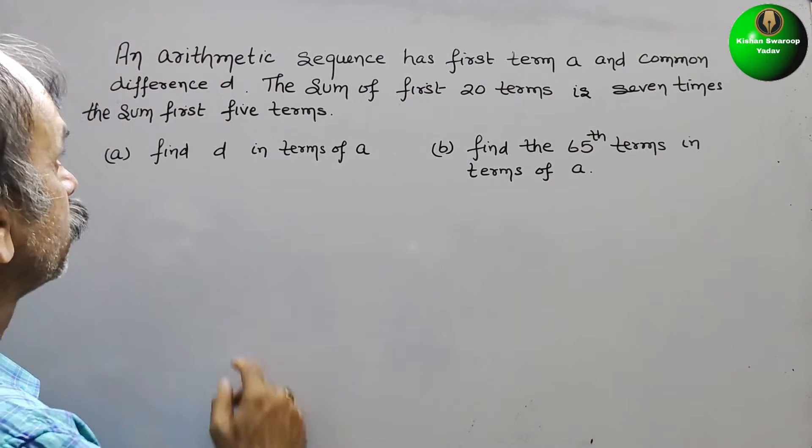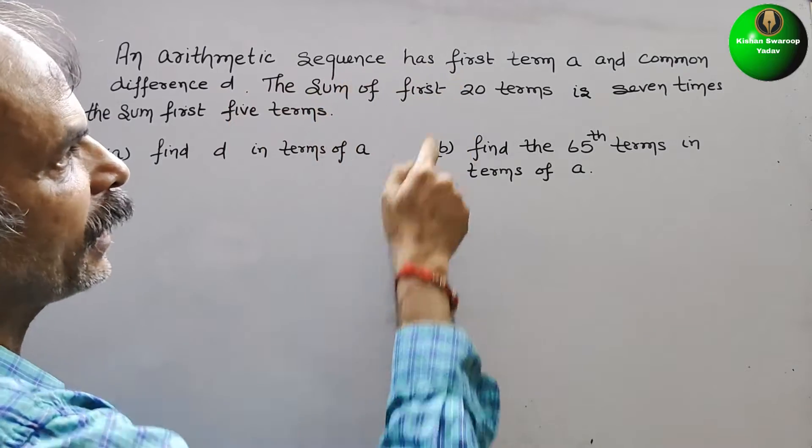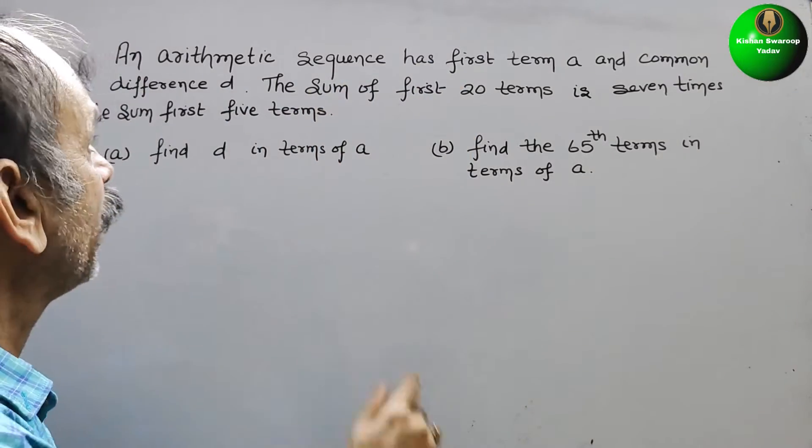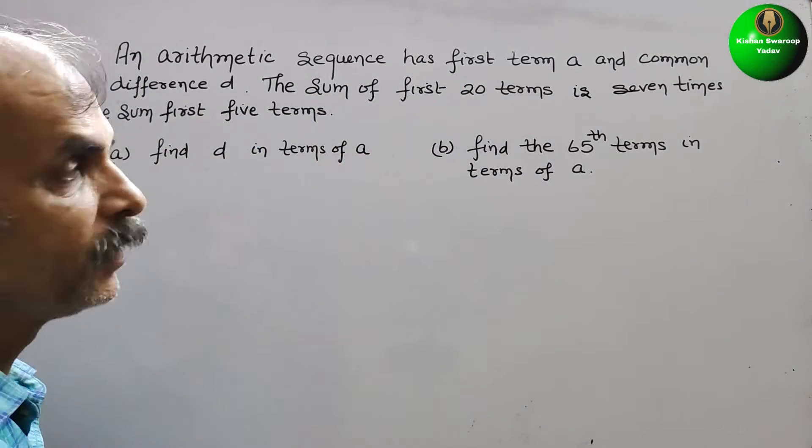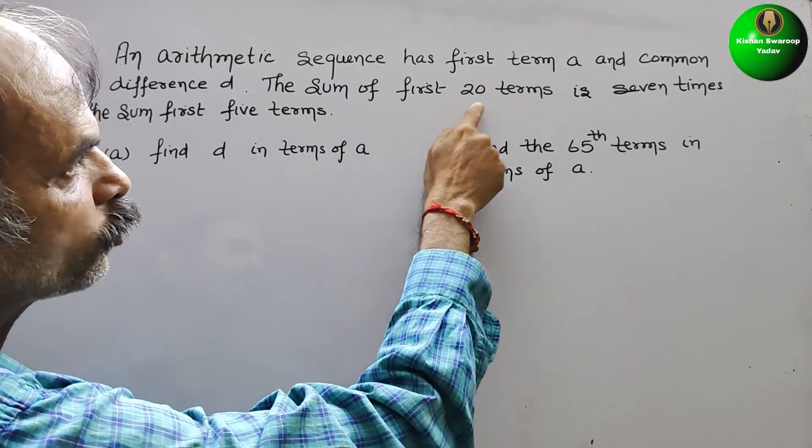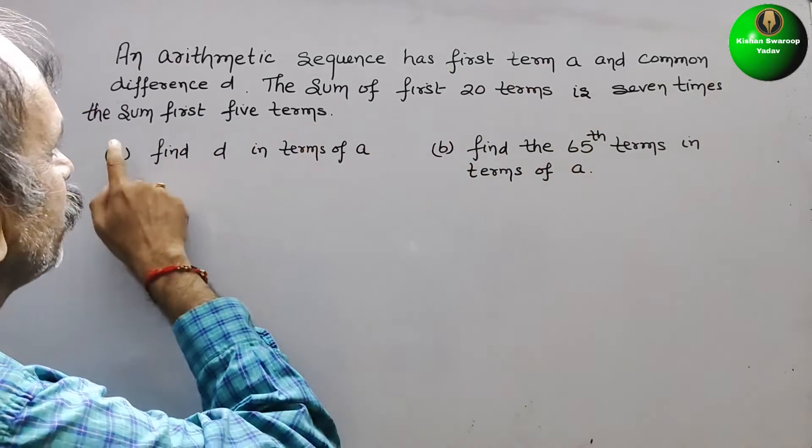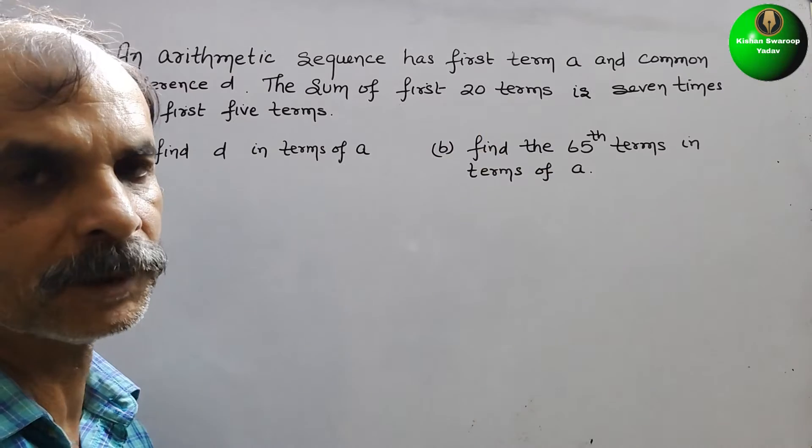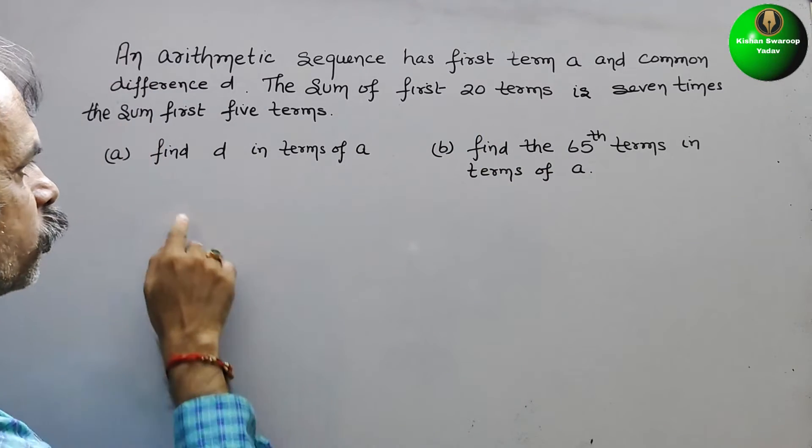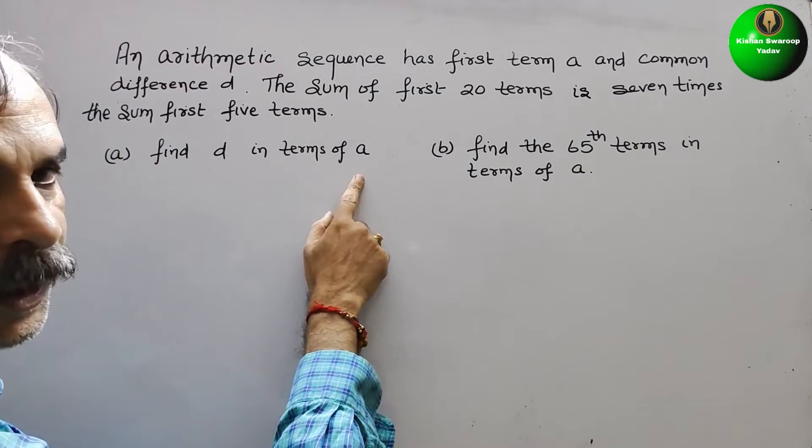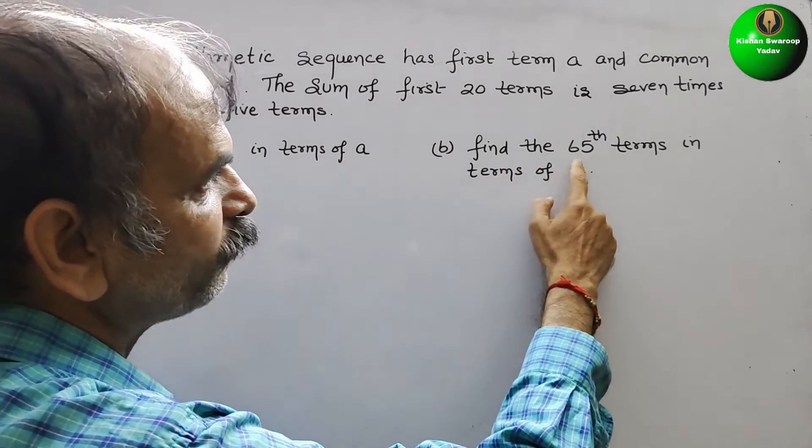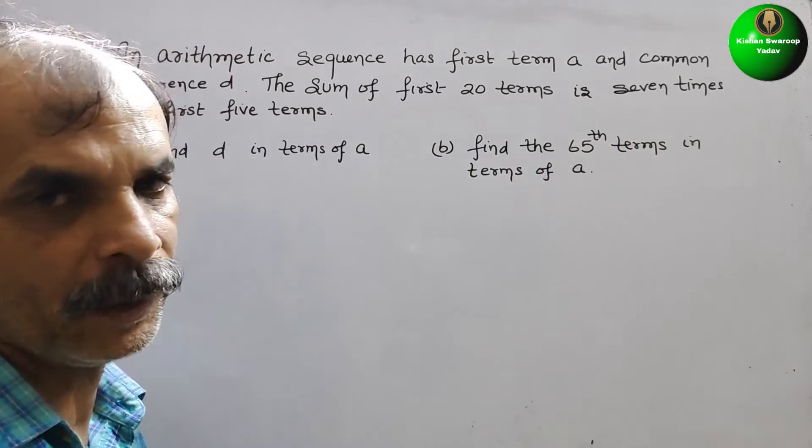Your question is: an arithmetic sequence has first term A and common difference D. The sum of the first 20 terms is 7 times the sum of the first 5 terms. Find D in terms of A, and find the 65th term in terms of A.